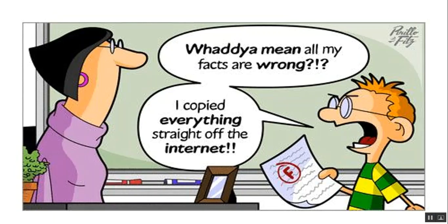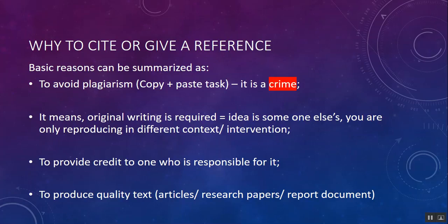Many times we come across examples where much of the content is copied from the internet but it does not give credits. This happens because it is basically considered a crime if proper citation is not given or the original work is not referred to in a systematic manner. We need to avoid plagiarism, which is essentially a copy-paste practice that students often carry out unknowingly to increase the volume of their text, mostly in the literature review.